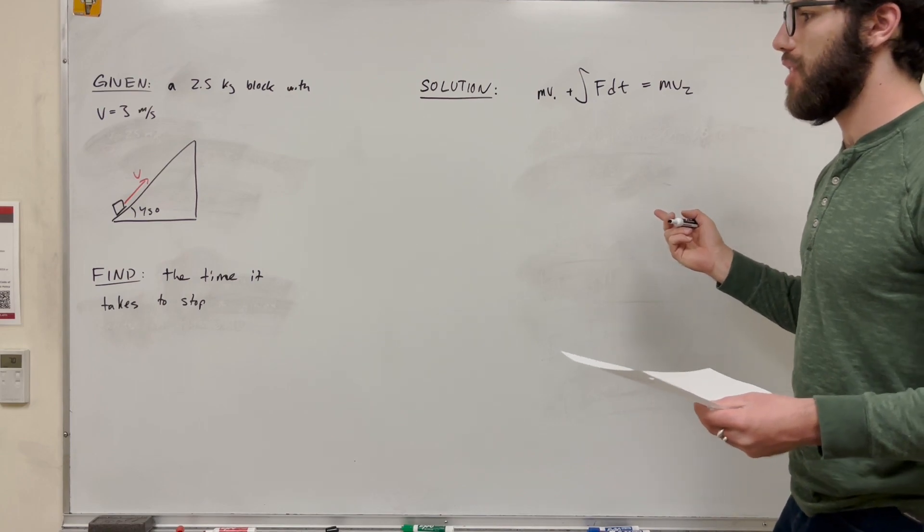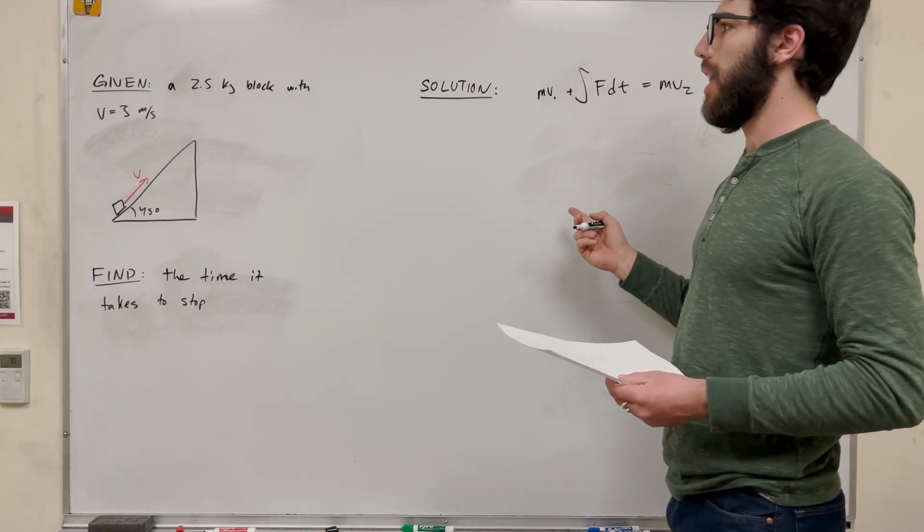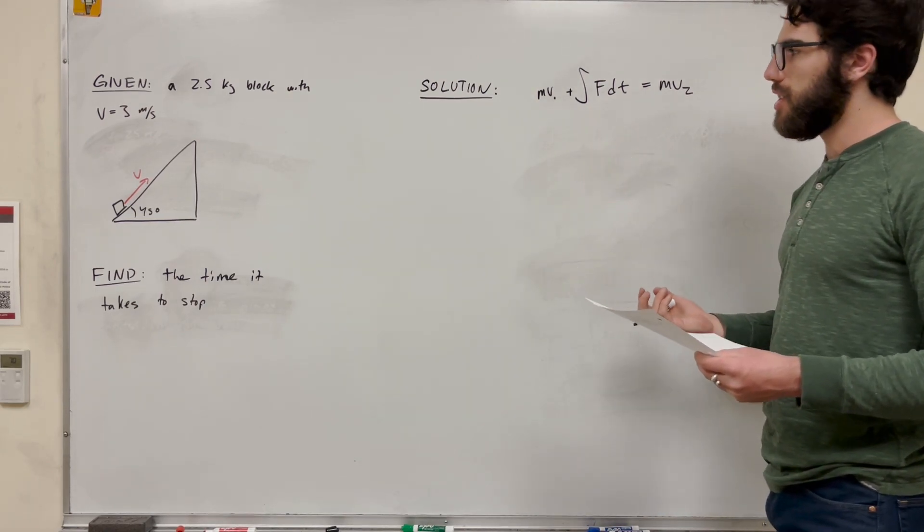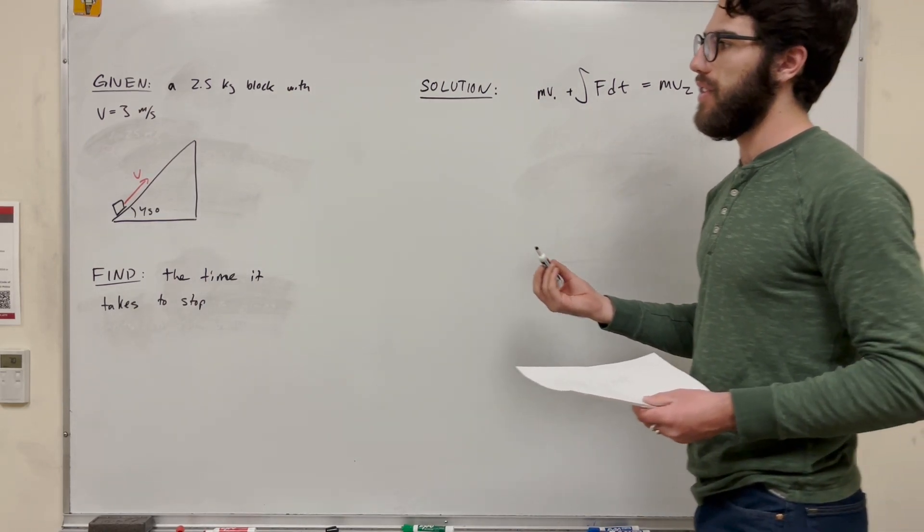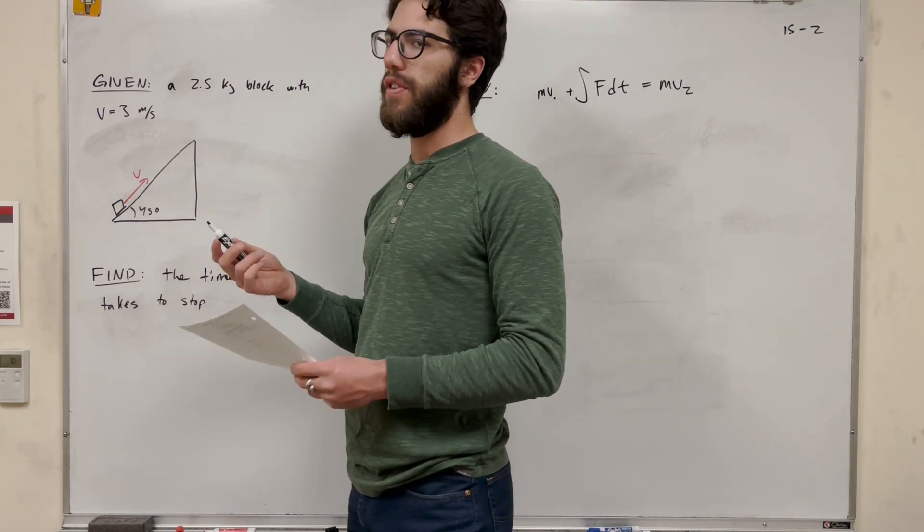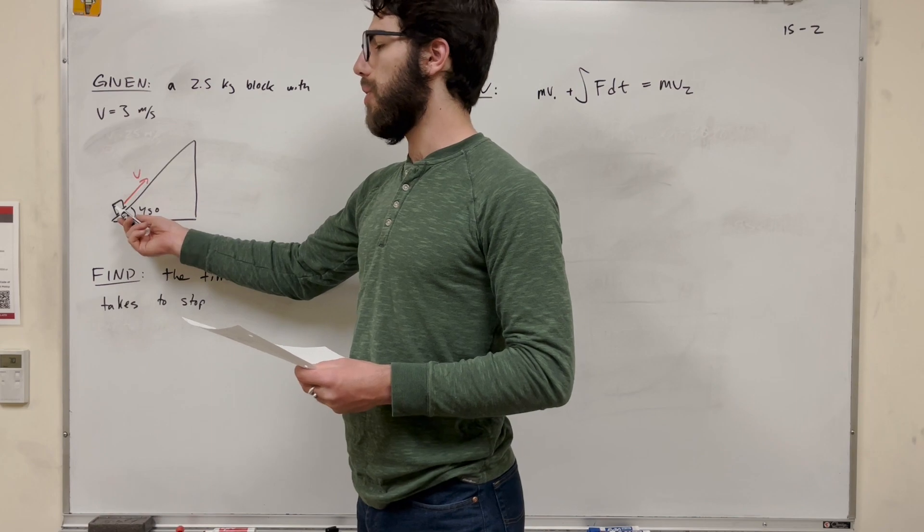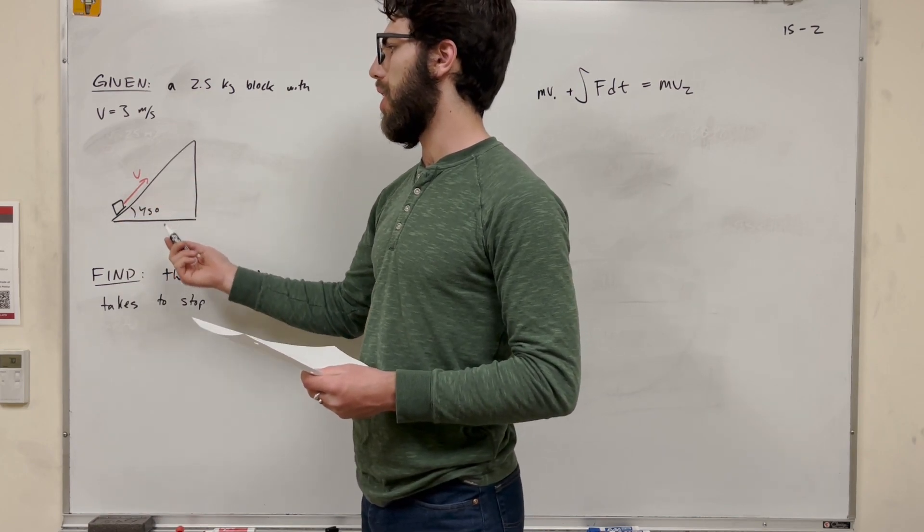So let's go ahead and solve for that. Let's plug in what we know. We know the mass is 2.5 kilograms. What's this force going to be? We should probably figure that out. That force is going to be the force of gravity. Gravity is what's pulling the block down. There's no friction on this block, so we don't have to worry about the force of friction. So all we really are worried about is the gravity pulling the block down.